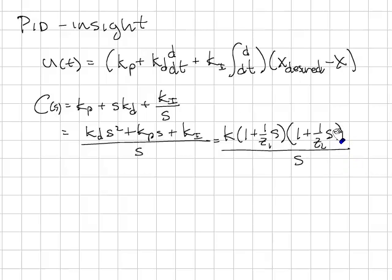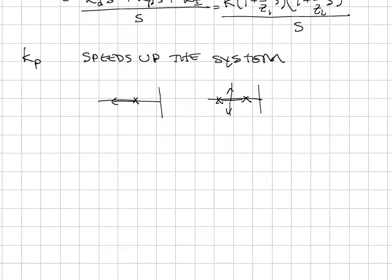On with some insight. Adding KP proportional control tends to speed up a system. This is not always the case, but it's a generality. You can see if you have a first-order system, adding KP sends a root in that direction, making it faster.